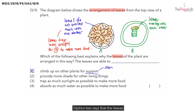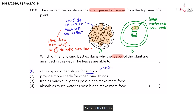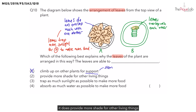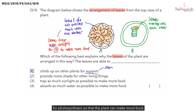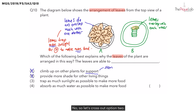Next, let's look at option two. Option two says that the leaves are able to provide more shade for other living things. That is actually true — when the leaves are more spread out as seen in plant A, it does provide more shade for other living things. But is that the main reason why the leaves are arranged in this way? No. The leaves are arranged in this way so that they can trap more sunlight for photosynthesis so that the plant can make more food. So option two cannot be the answer, let's cross it out.